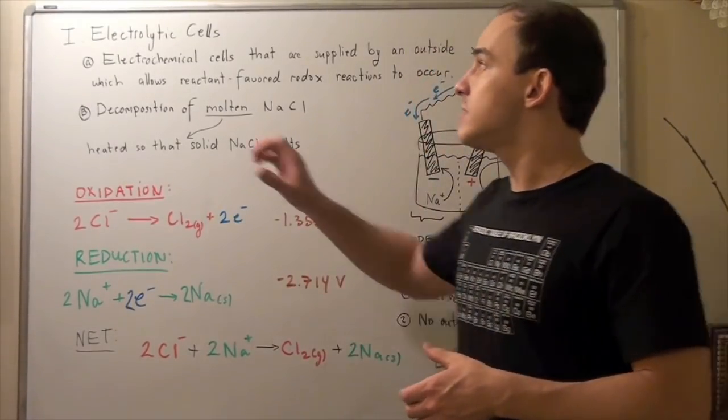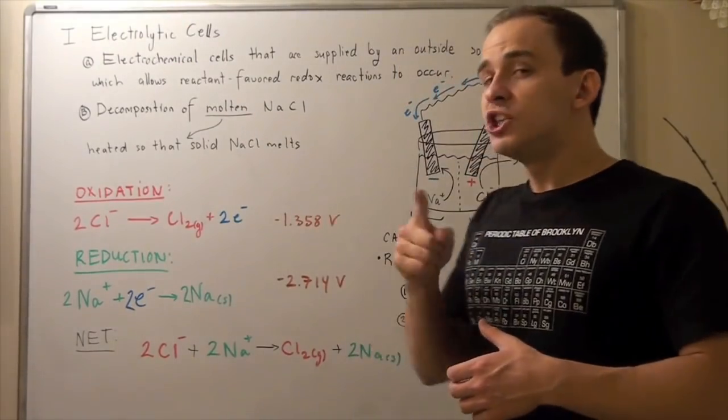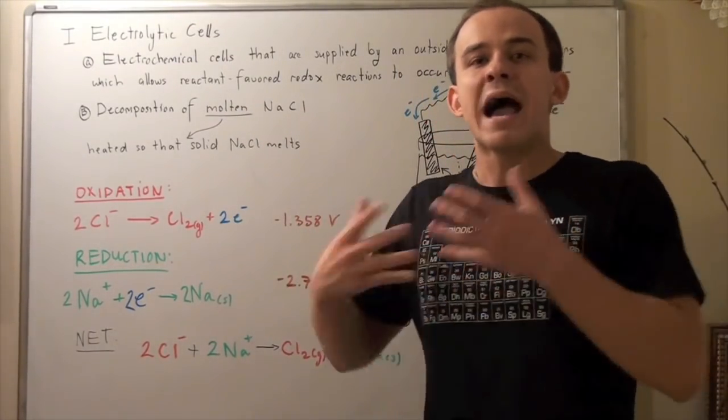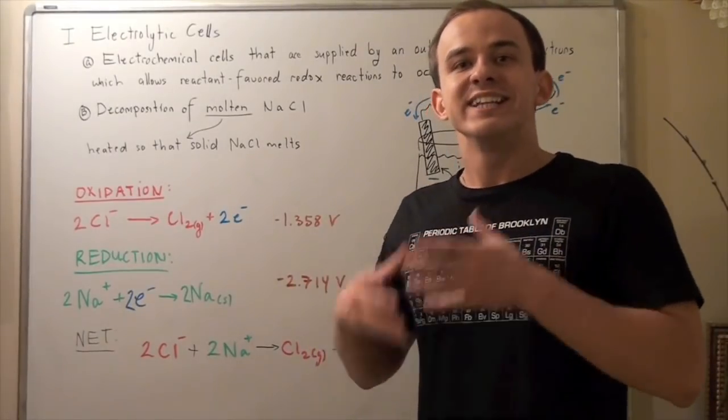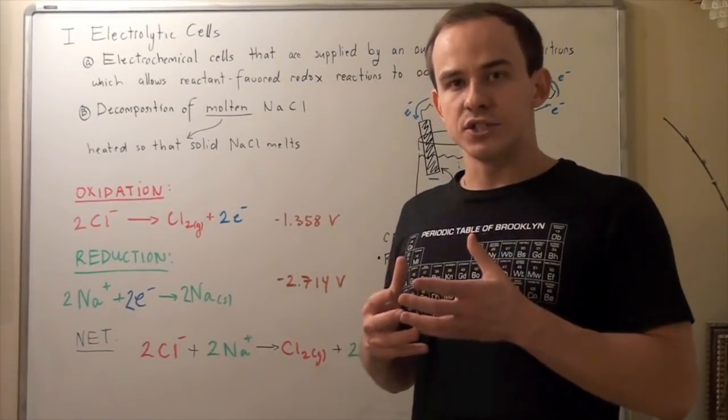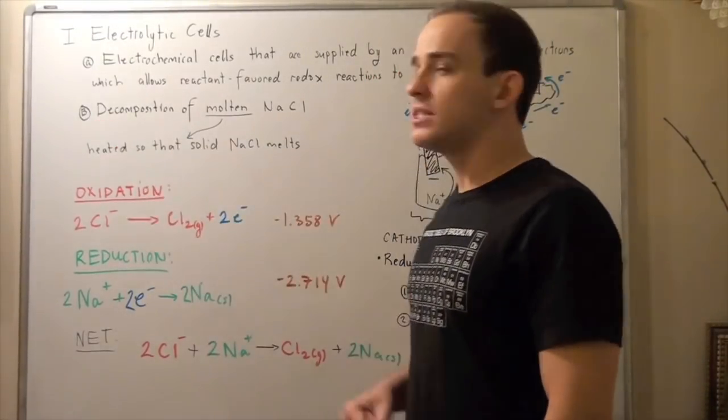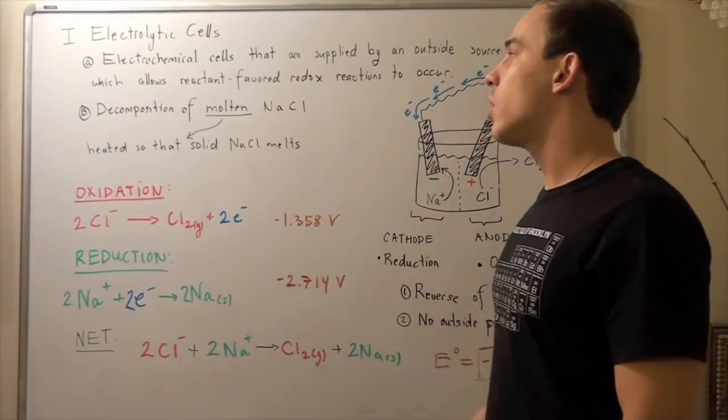So unlike voltaic cells, electrolytic cells do the opposite. They use up electrical work to power reactant-favored non-spontaneous reactions. Now let's look at an example. Let's look at the decomposition of molten sodium chloride.